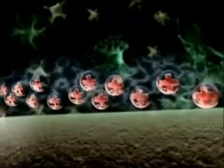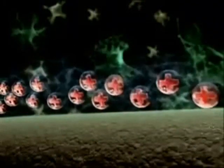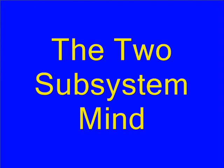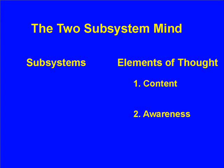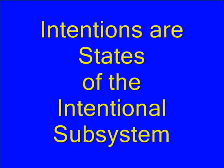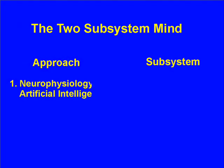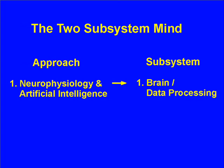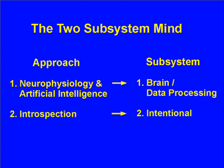In addition to the findings of neuroscience, our model needs additional elements to account for awareness and intentionality. In order to account for the two elements of thought, we need a data processing subsystem — which is the brain — and an intentional subsystem, which is responsible for awareness and committed intentionality. Neurophysiology, and to some extent artificial intelligence, use objective methods to study our data processing subsystem. Introspection, on the other hand, uses a subjective method to study our intentional subsystem.